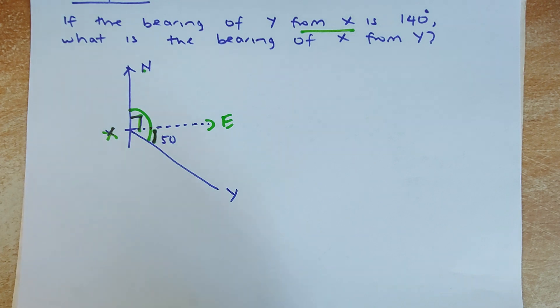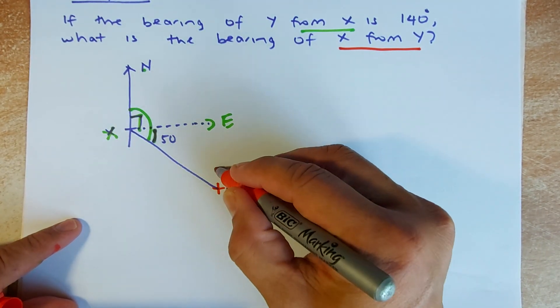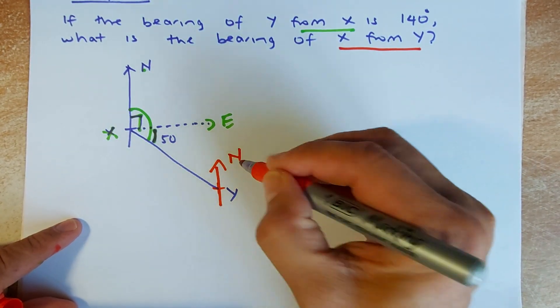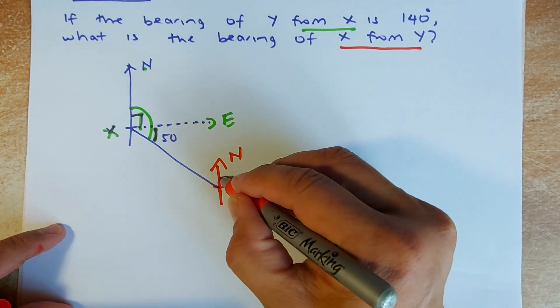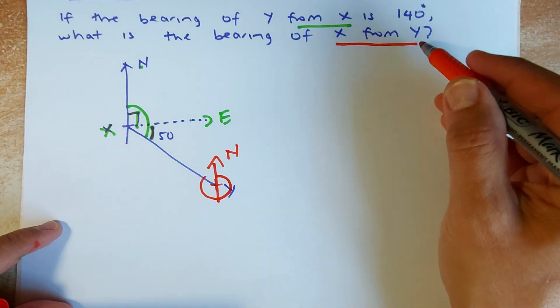What is the bearing of X from Y? Now Y is the starting point. So we need to draw another north there and we are going to calculate that angle here now. That is the bearing of X from Y.